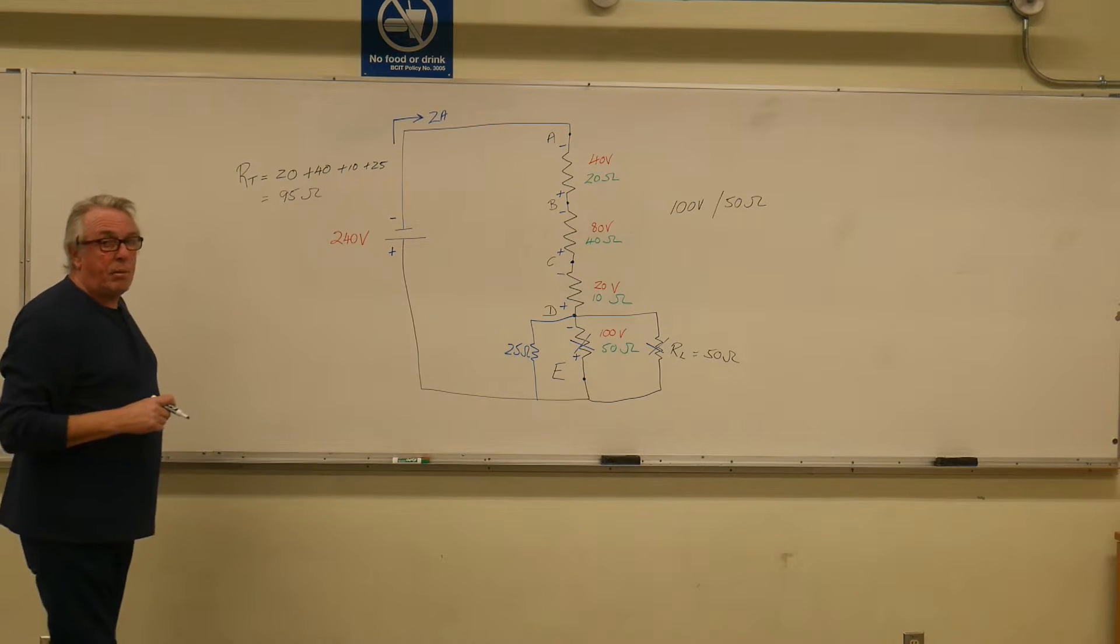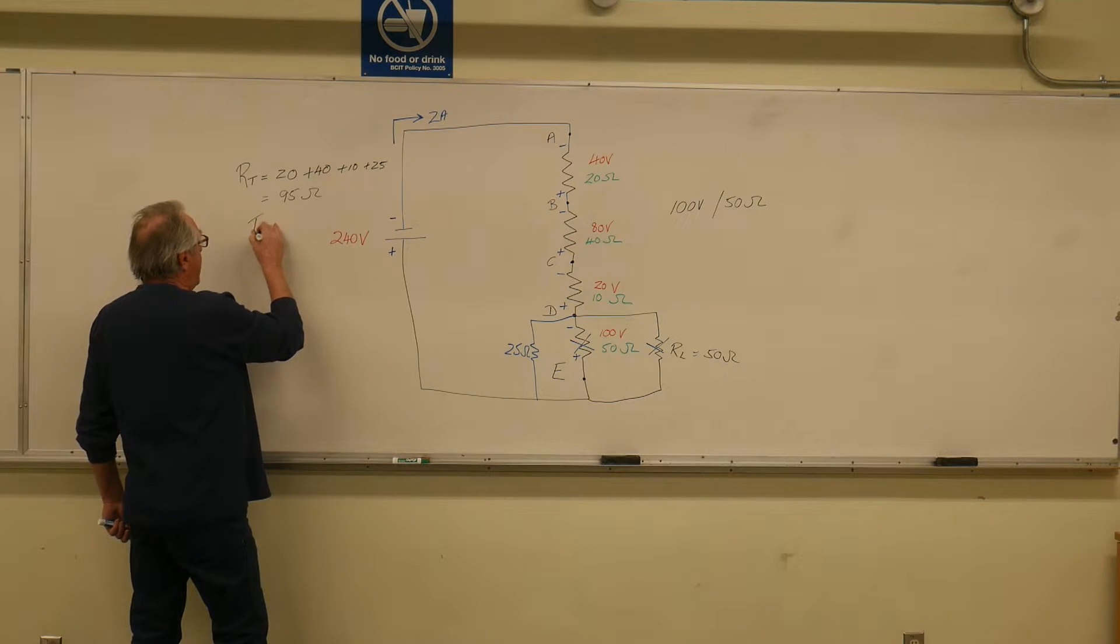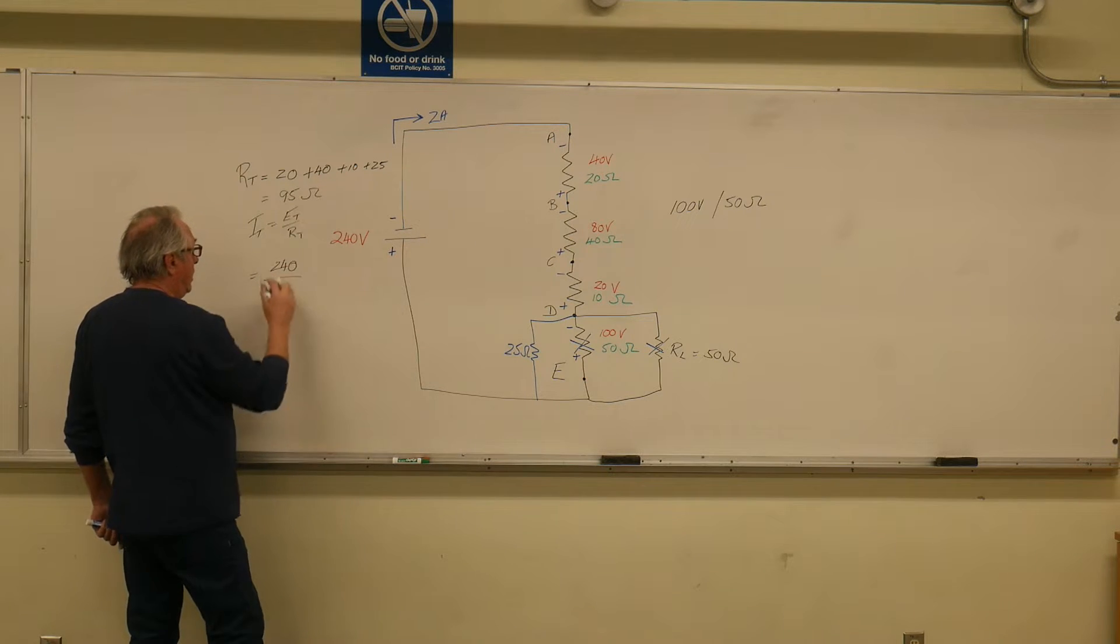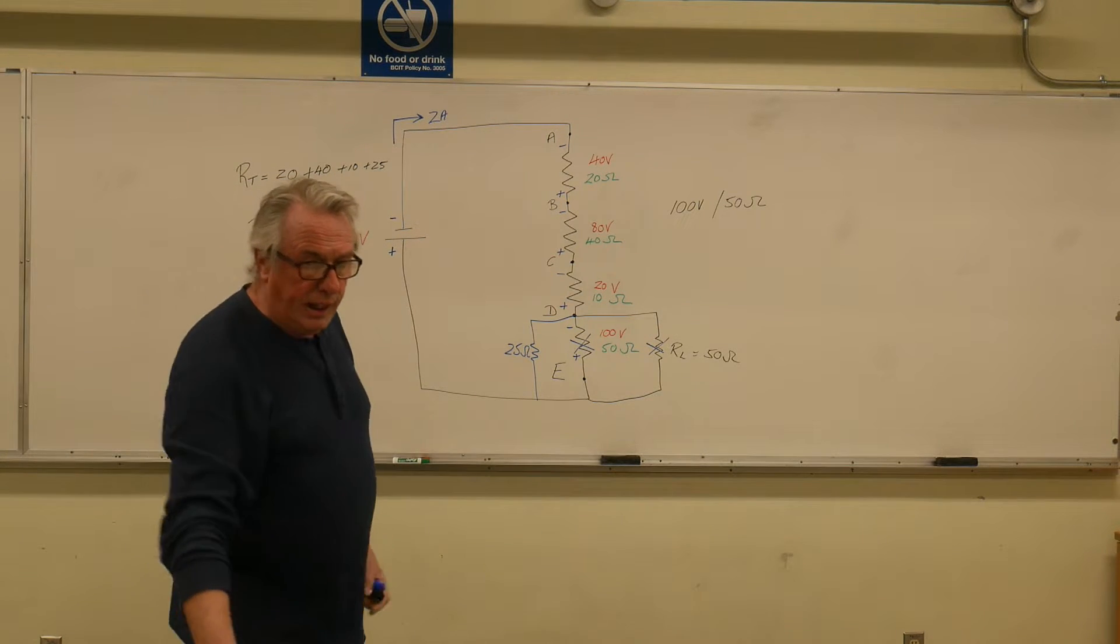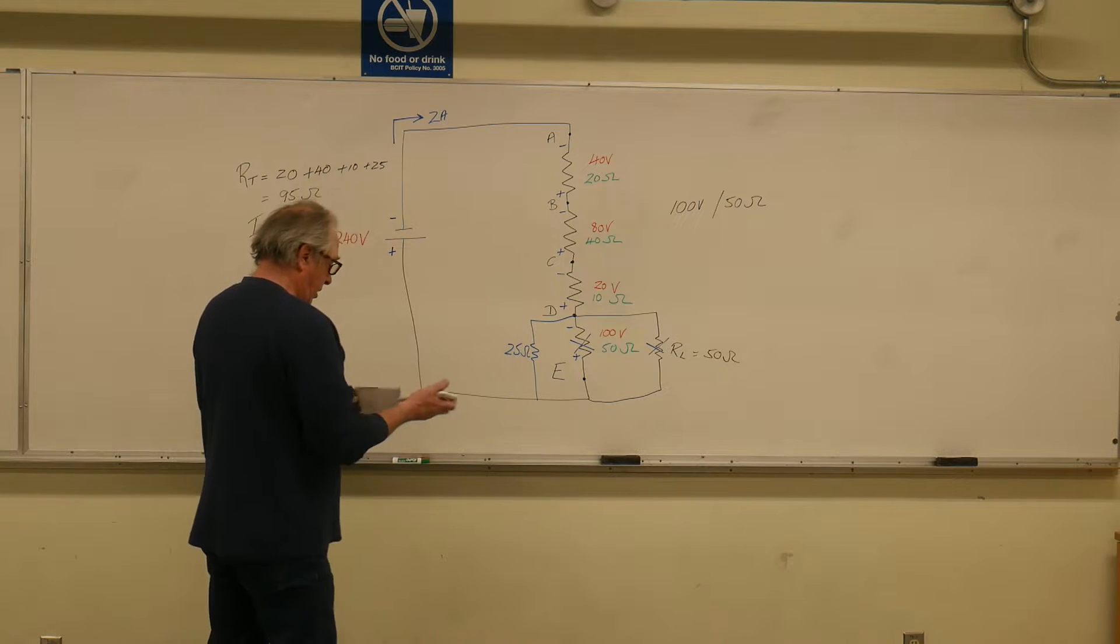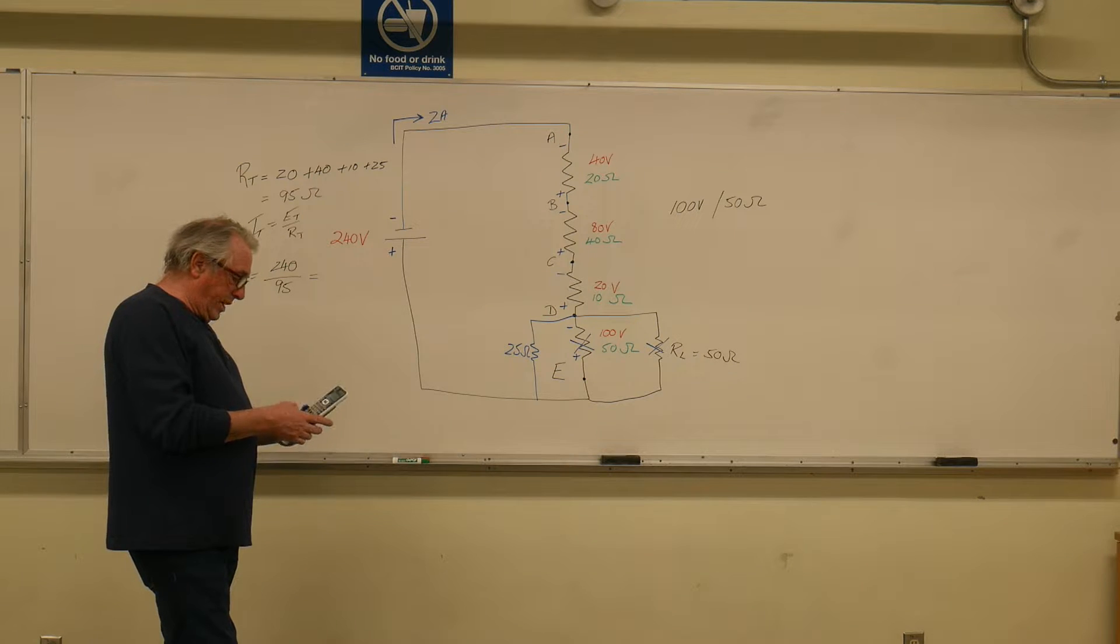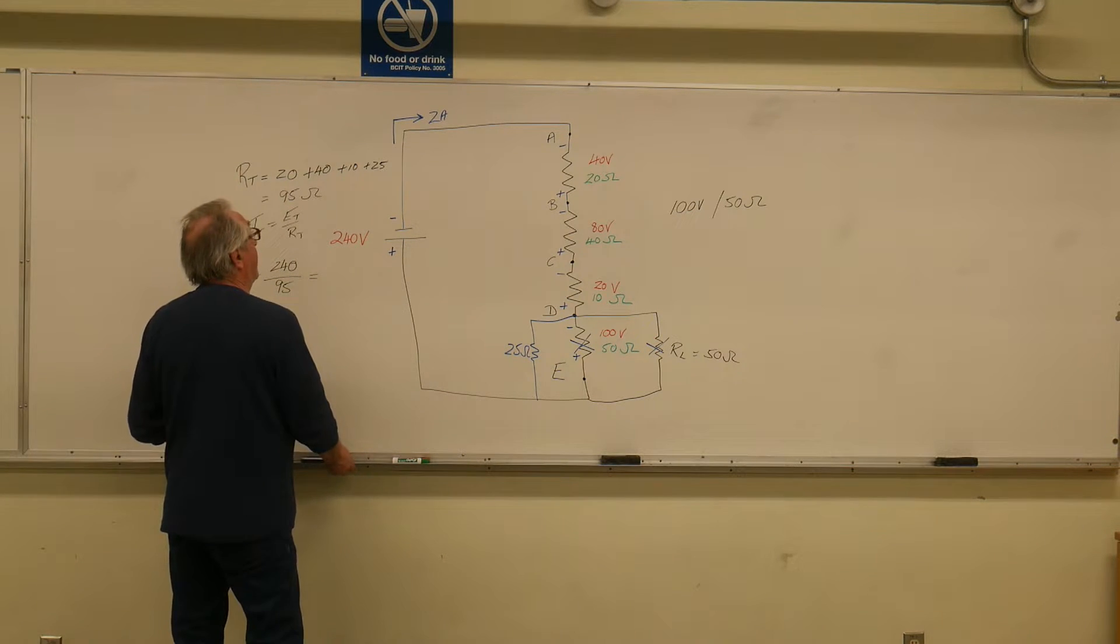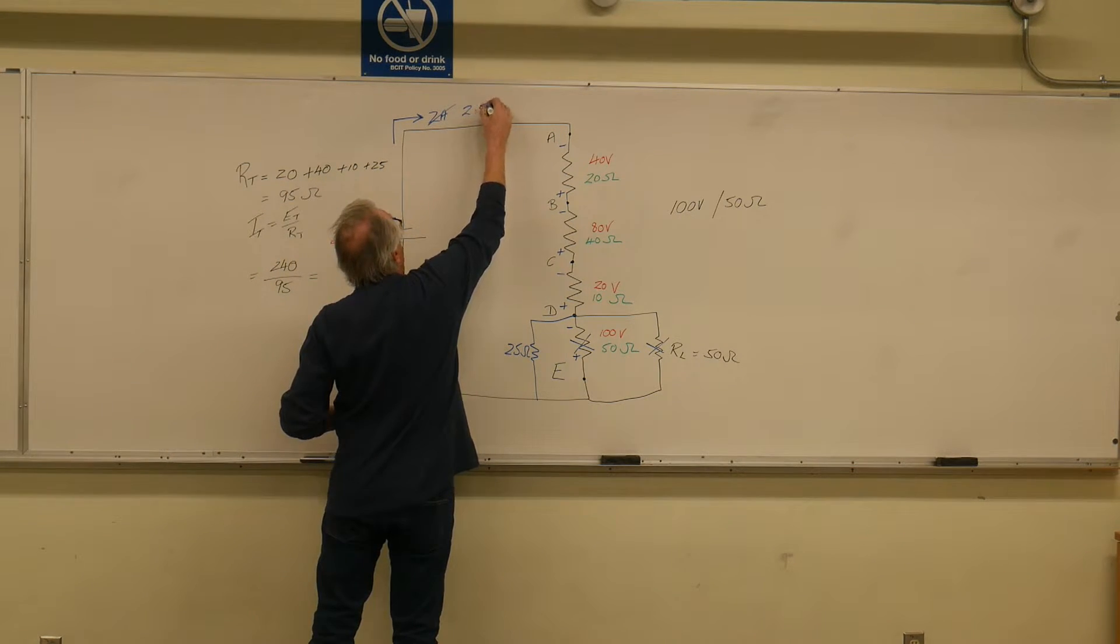The voltage is still the same, but what's going to change? Well the current is going to change obviously. So IT equals ET over RT, which is 240 over 95. Which comes out, this is my calculator, let's figure it out. Is it almost 7? 240 divided by 95 equals 2.53. So this is 2.53 amps.